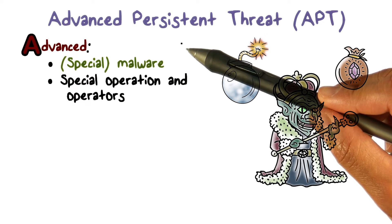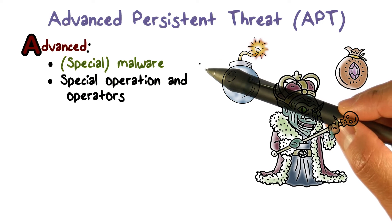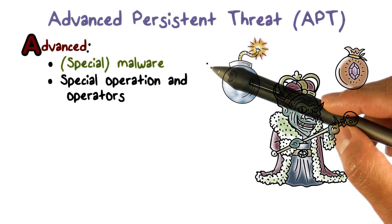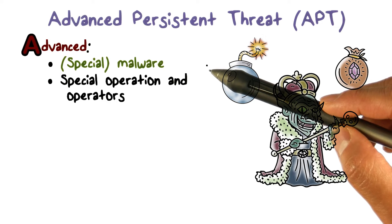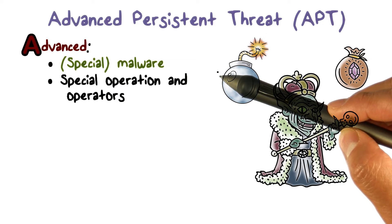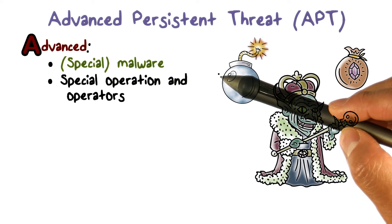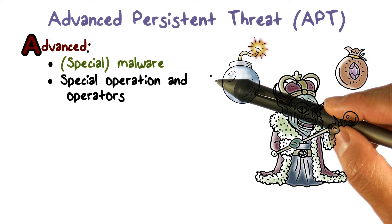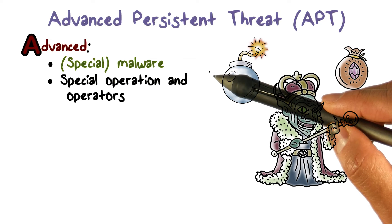APT is advanced, which means that it uses special malware. Sometimes the malware is specifically crafted for the targeted organization. But very often, the malware is actually a special version of a common malware that has been used in other botnets. By starting from a common malware, the attackers behind the APTs want to have both convenience and deniability. That is, security admins will not suspect that the malware is APT — they will think that this is a new version of the common malware.